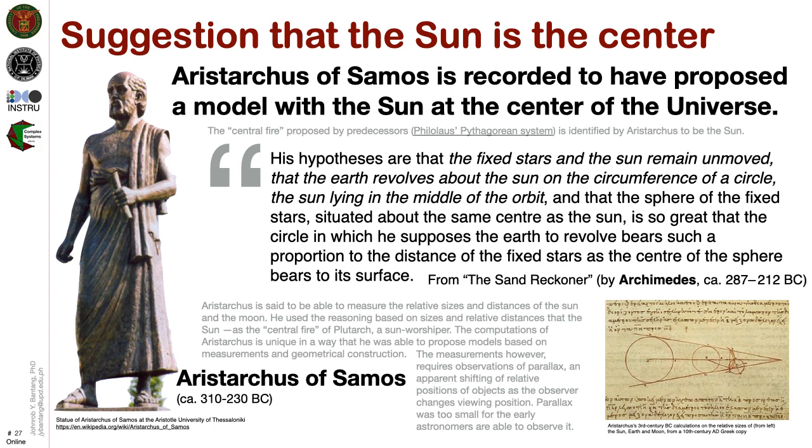Aristarchus of Samos is recorded to have proposed a model that placed the sun as the central fire of the universe originally proposed by Plutarch, a sun worshipper. His proposition is recorded in the Sand Reckoner based on the accounts of Archimedes. His hypotheses are that the fixed stars and the sun remain unmoved, that the Earth revolves about the sun on the circumference of a circle, the sun lying in the middle of the orbit, and that the sphere of fixed stars is so great that the circle in which he supposes the Earth to revolve bears such a proportion to the distance of the fixed stars as the center of the sphere bears to its surface. Some historians think that Copernicus based his heliocentric model from this model of Aristarchus.